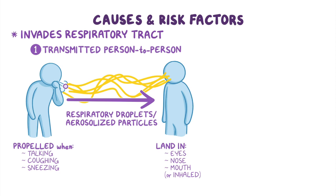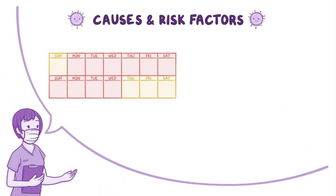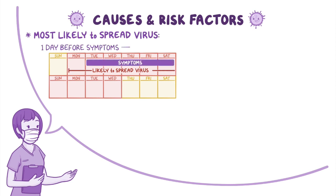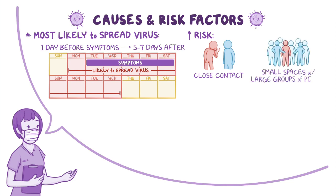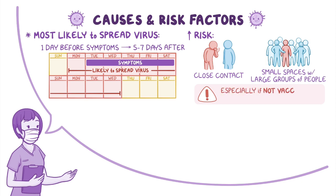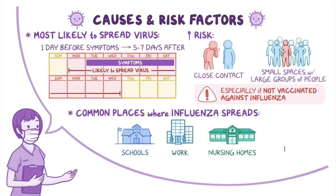Less frequently, the virus is transmitted indirectly when an individual touches a contaminated surface, and then prior to washing their hands, they touch their eyes, nose, or mouth. Individuals are most likely to spread the virus to others one day before symptom onset until about five to seven days after becoming sick. People are at increased risk for contracting the virus if they have close contact with infected individuals or are in small spaces with large groups of people during flu season, especially if they're not vaccinated. Common places where the influenza virus spreads include schools, workplaces, nursing homes, or on public transportation.